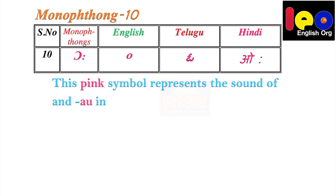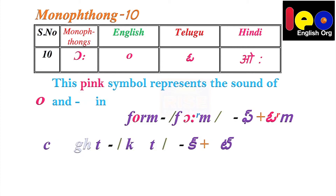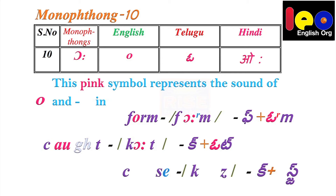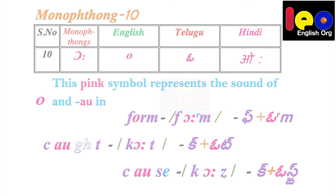Monophthong 10. This pink symbol represents the sound of O in 'form,' the sound of AU in 'cot,' and the sound of AU in 'cause.' It means it is the long form of O.